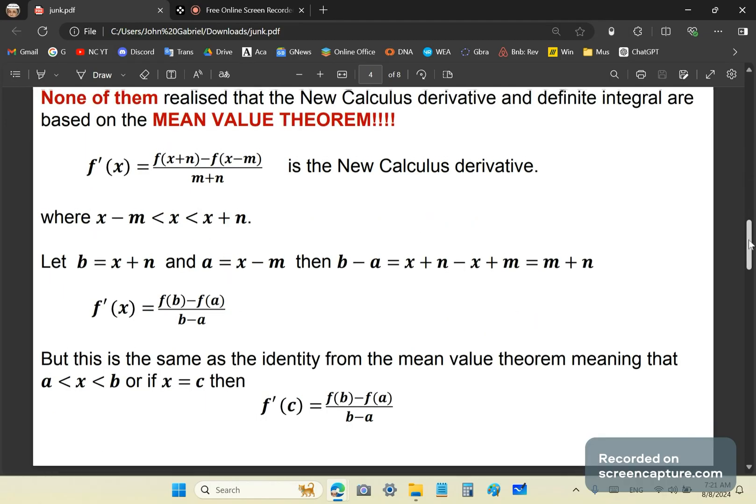None of them realized that the new calculus derivative and definite integral are based on the mean value theorem. Now, if the new calculus were a load of garbage, then the mean value theorem is a load of garbage. Wouldn't that be a correct inference? Of course it would.